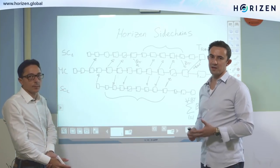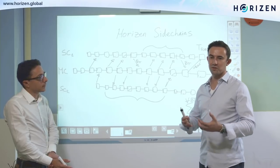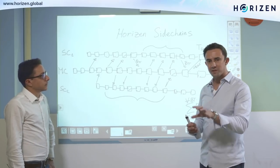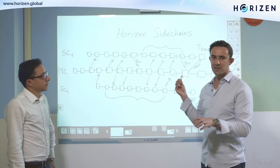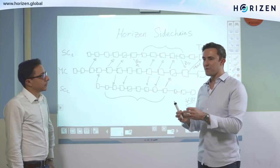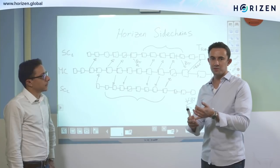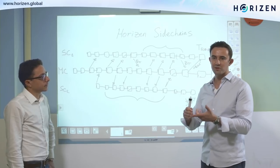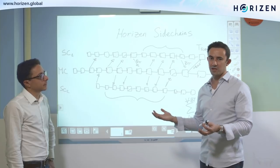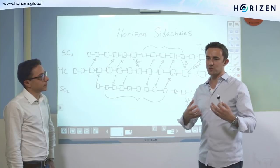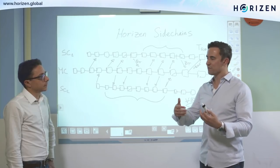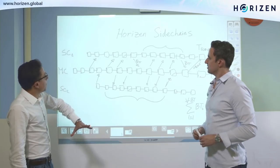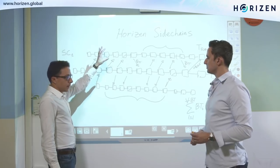Just for some viewers who might not understand: a Coinbase transaction is the initial block reward. Every block that's mined has a Coinbase transaction. In the Horizon network right now, we have a diversion of the Coinbase transaction: 70% goes to miners, 10% to qualifying secure node operators, 10% to super node operators, and 10% to a treasury fund. So what Alberto is talking about is the commitment of Coinbase block reward transactions to a dedicated sidechain.